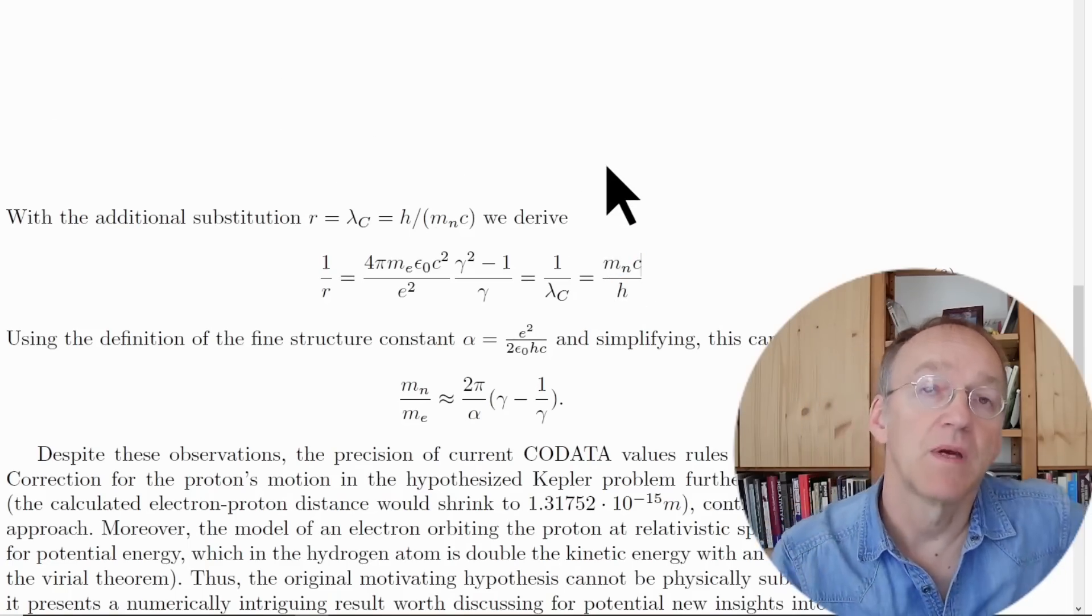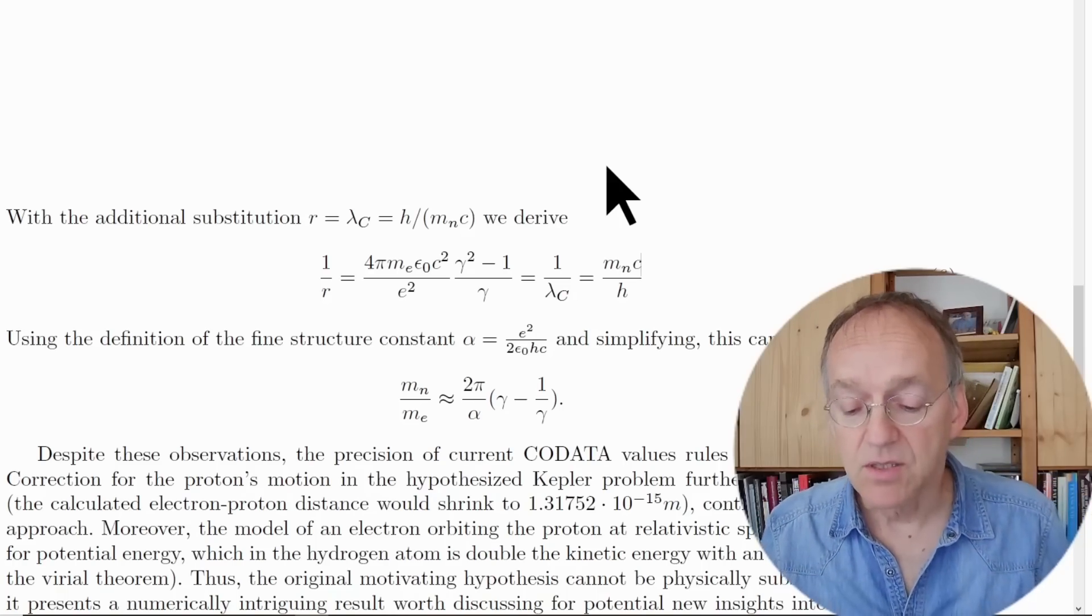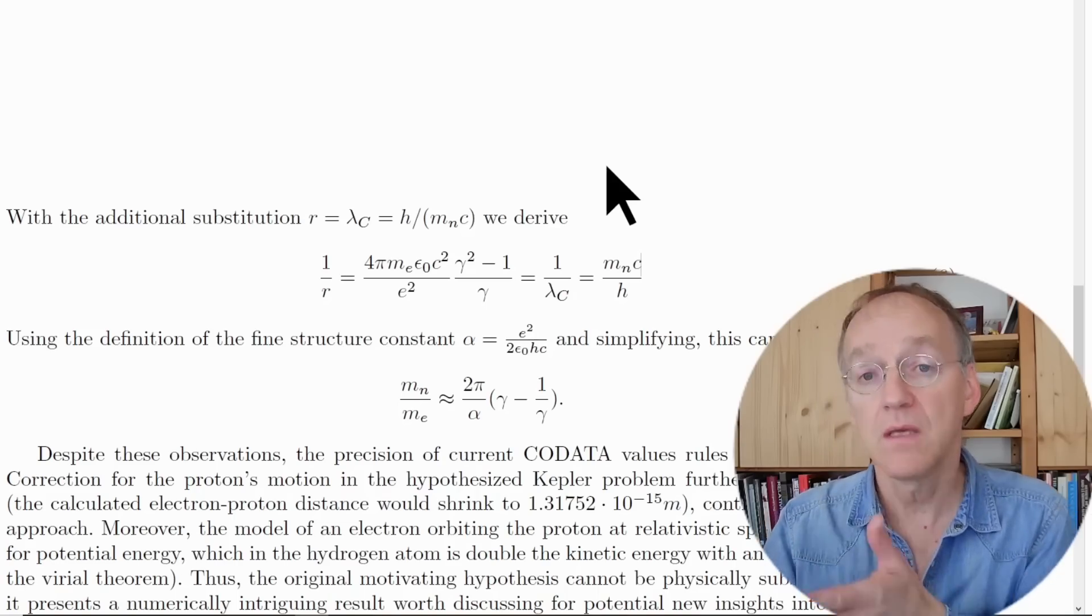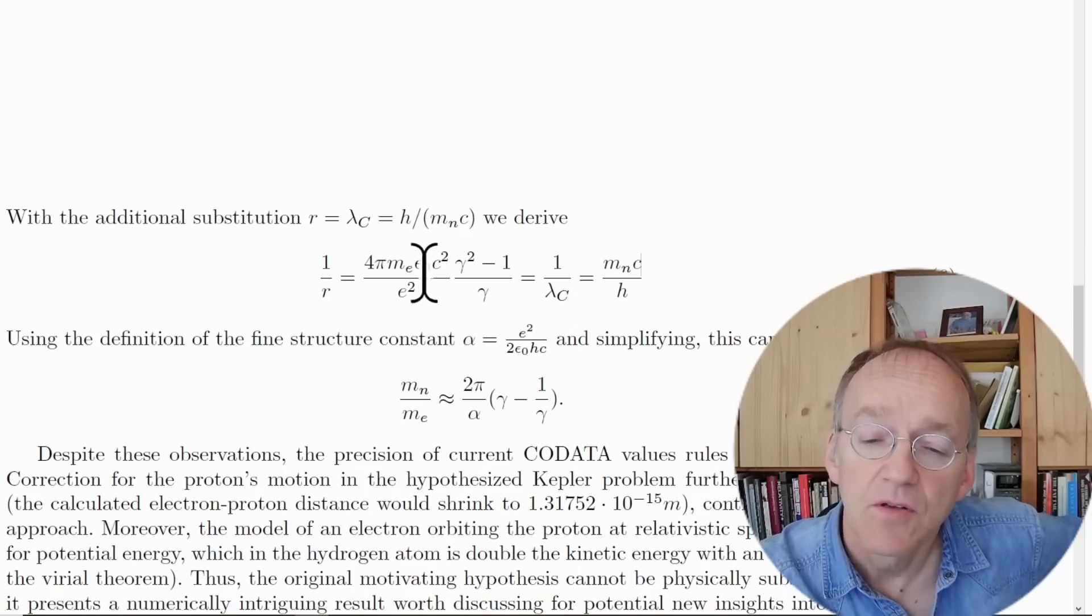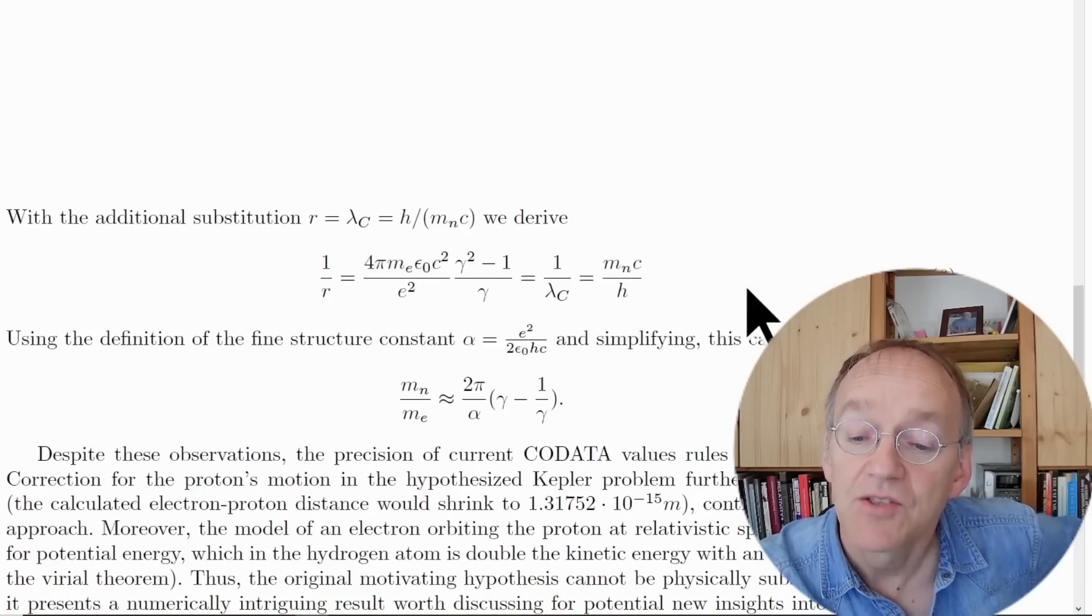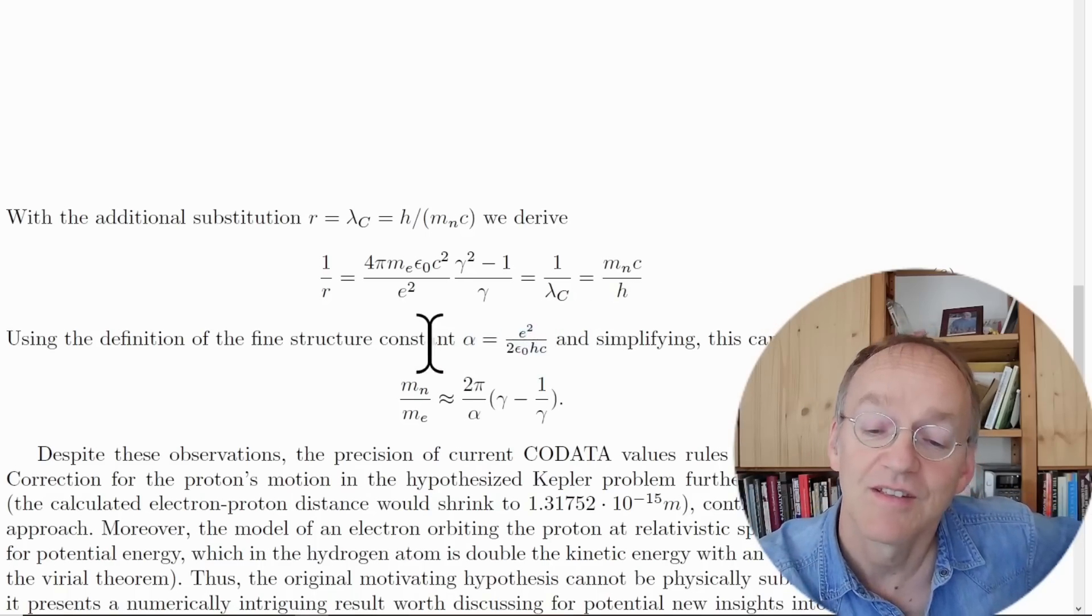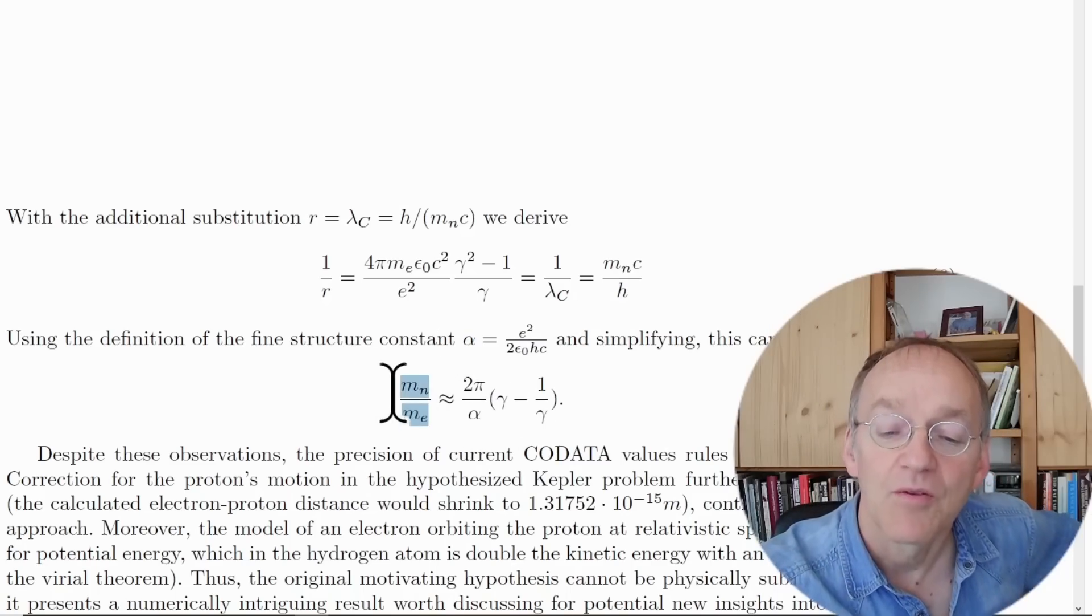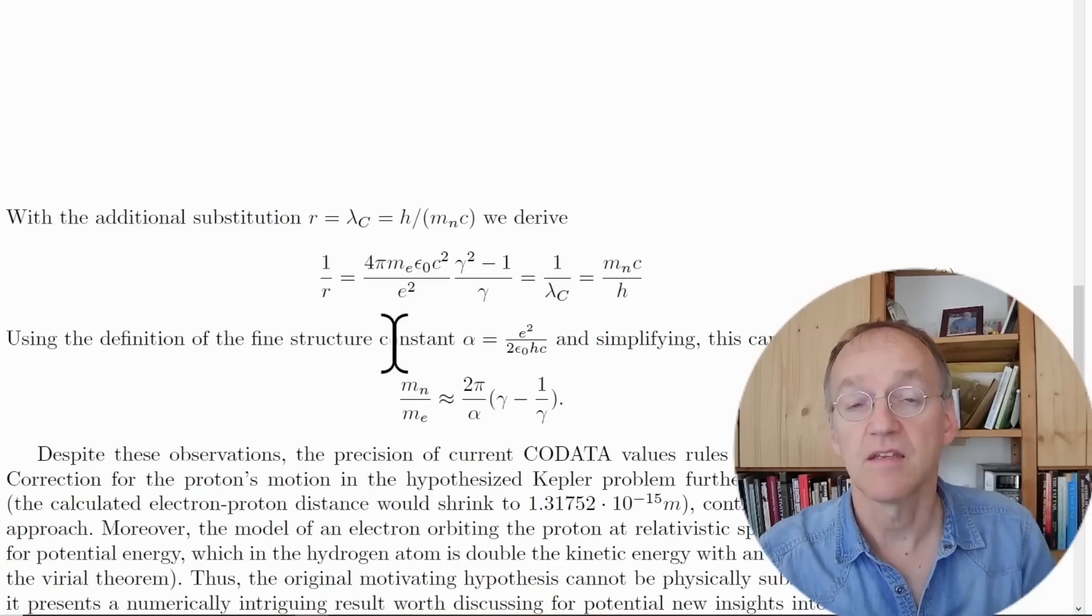You write down the Compton wavelength. The Compton wavelength, by the way, you can visualize it by the idea that the mass of any particle is equivalent to the mass of a photon of determined frequency, then you compute the respective wavelength. Interestingly here, if you combine the numbers, you see popping up epsilon naught c and also h, so this brought me to the idea to introduce the fine structure constant here.